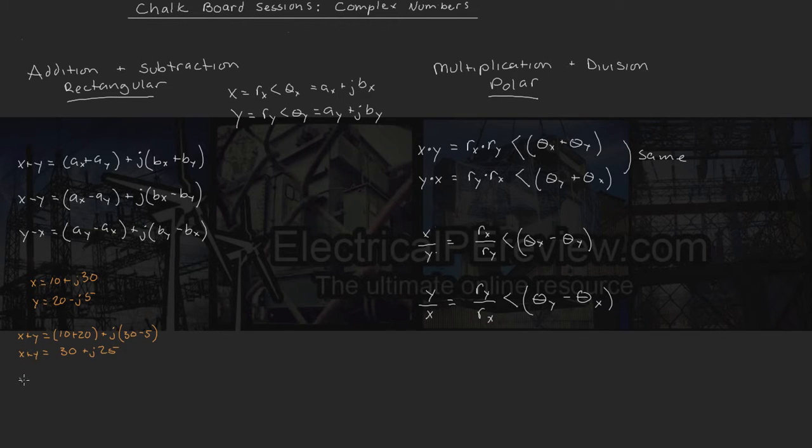Now what if we're asked for x minus y? All right, same thing as above, except now we're going to subtract our components. So we're going to have a real component of 10 minus 20 plus j30 minus negative 5. If we carry out our math, we end up with a real component of negative 10 plus, since these two negatives cancel out, an imaginary component of 35.